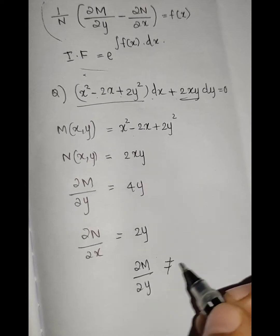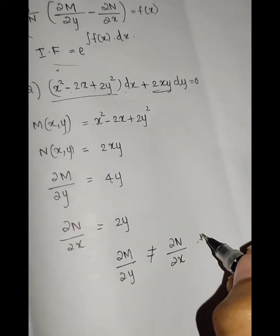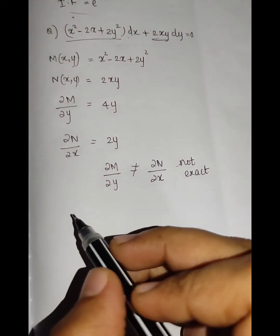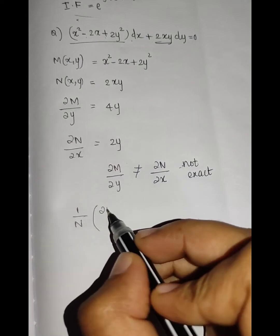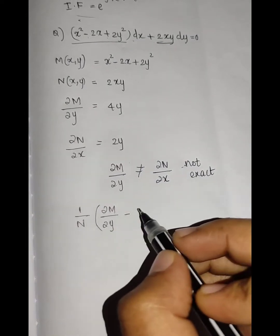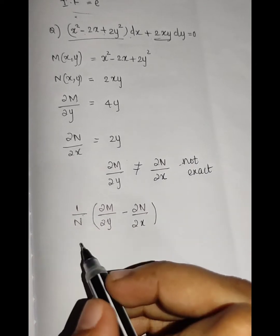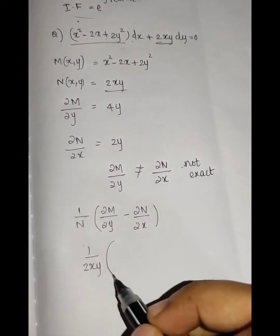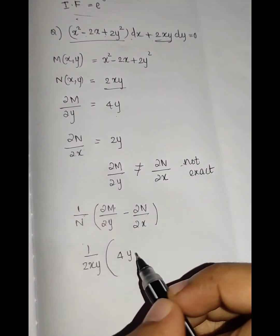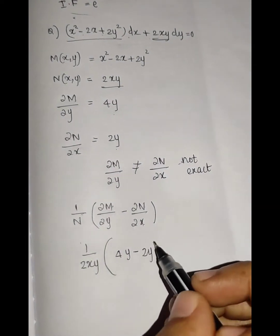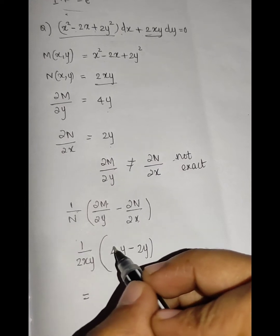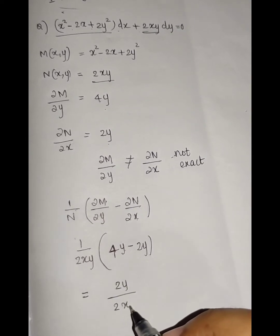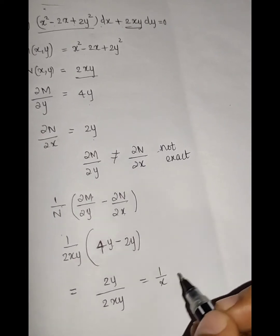Since ∂M/∂y is not equal to ∂N/∂x, the equation is not exact. We compute 1/N times (∂M/∂y minus ∂N/∂x): 1/(2xy) times (4y minus 2y) equals 2y/(2xy) equals 1/x. This is f(x).